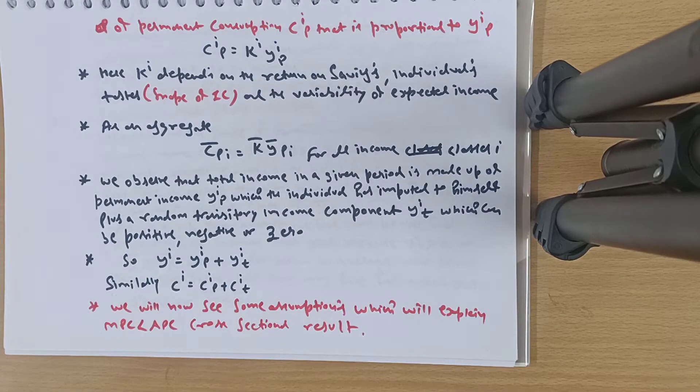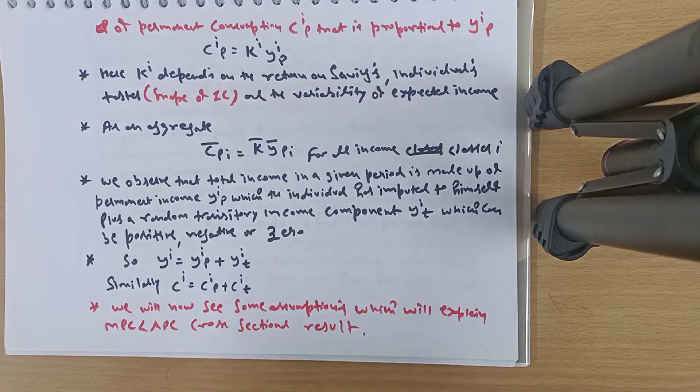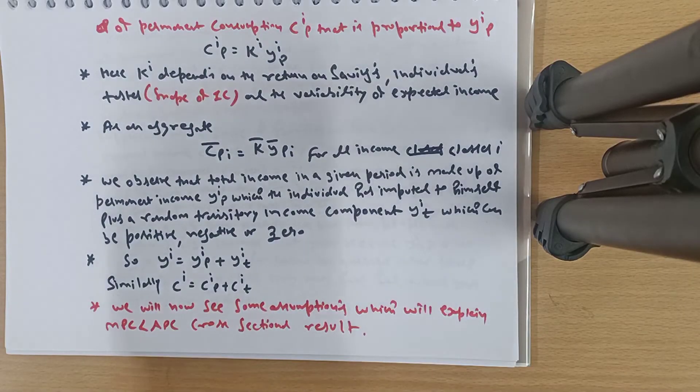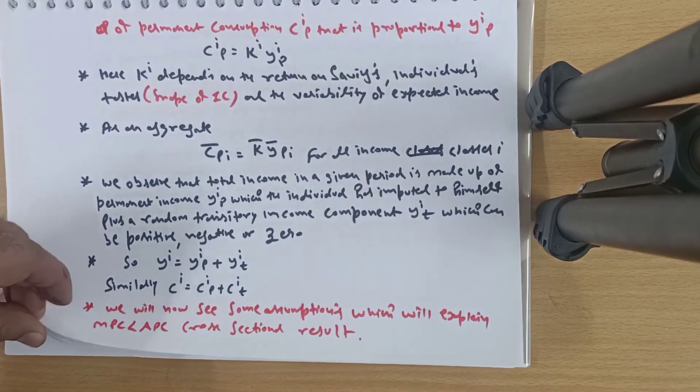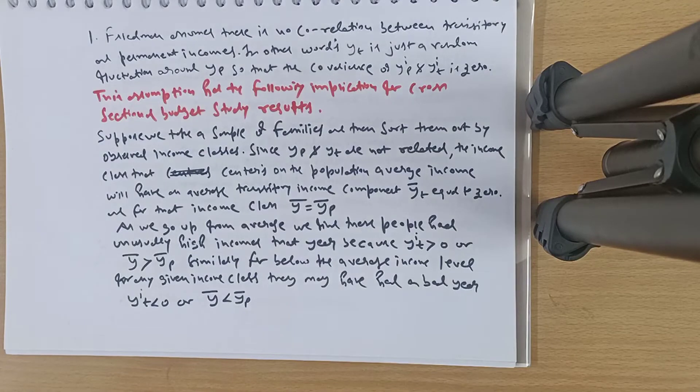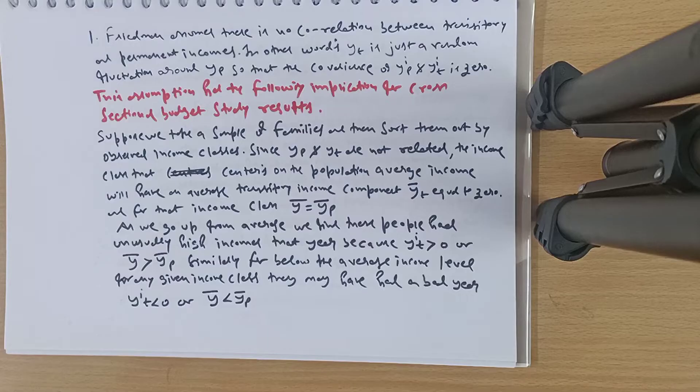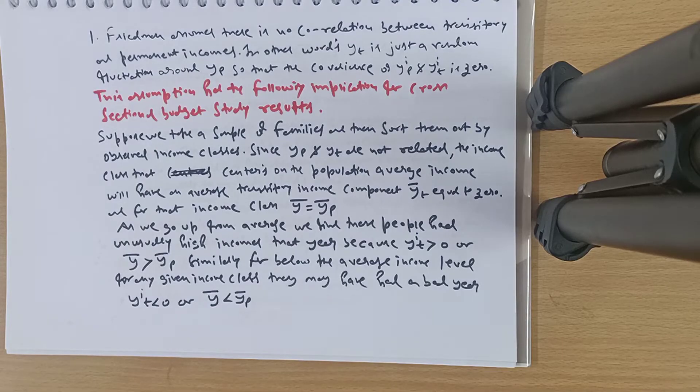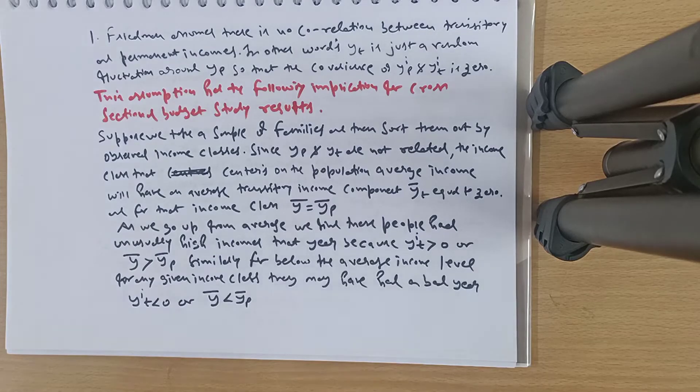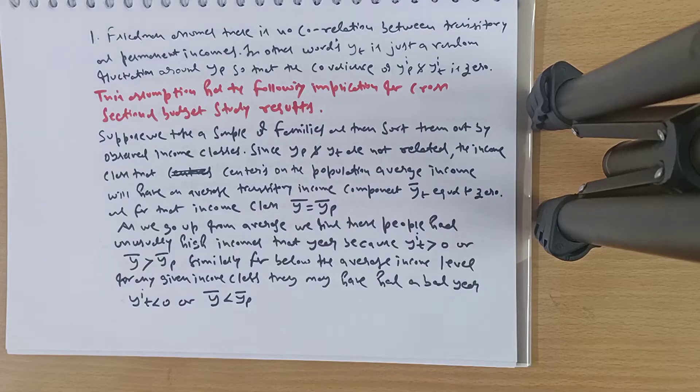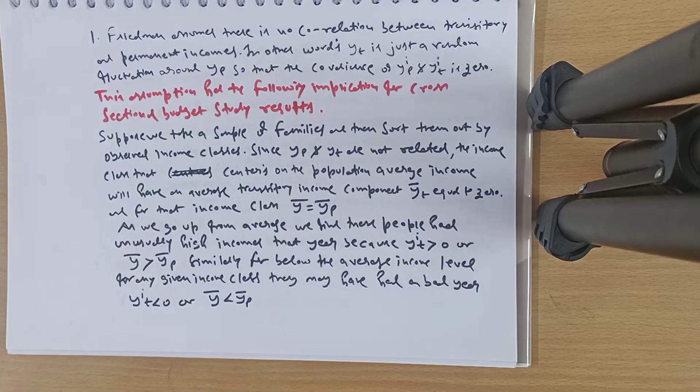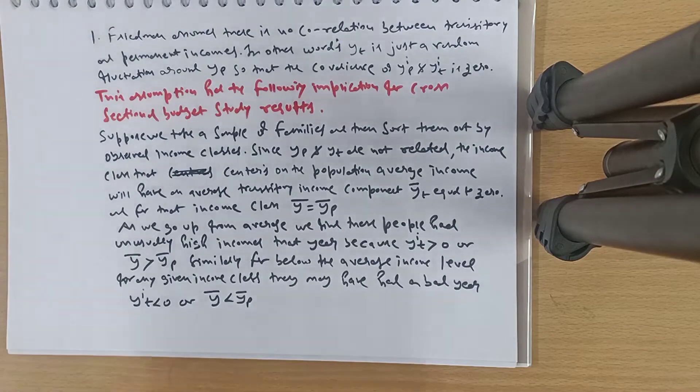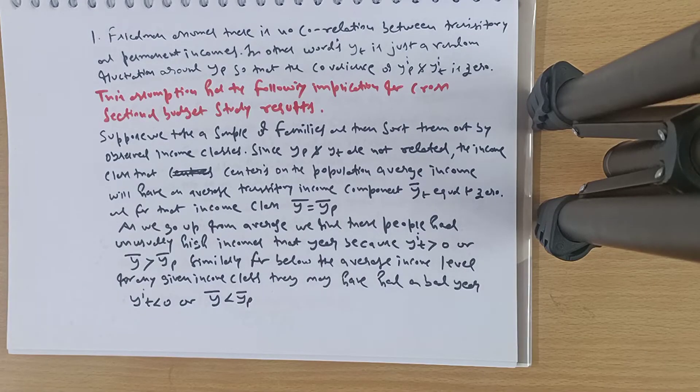We will now see some assumptions which explain why MPC is less than APC in cross-sectional results. As you remember from Keynes' consumption puzzle, in the short run APC was falling, while in the long run it remained constant. We gave you the solution in the previous theory with Life Cycle Hypothesis. You will also get the solution from this Permanent Income Theory. Let's look at three assumptions. First, Friedman assumes there is no correlation between transitory and permanent income. In other words, Yit is just a random fluctuation around Yp, so that the covariance of Yip and Yit is zero. This means it's not the case that if someone's income is higher, their transitory variable will also be higher. There is no relation between permanent income and transitory income.